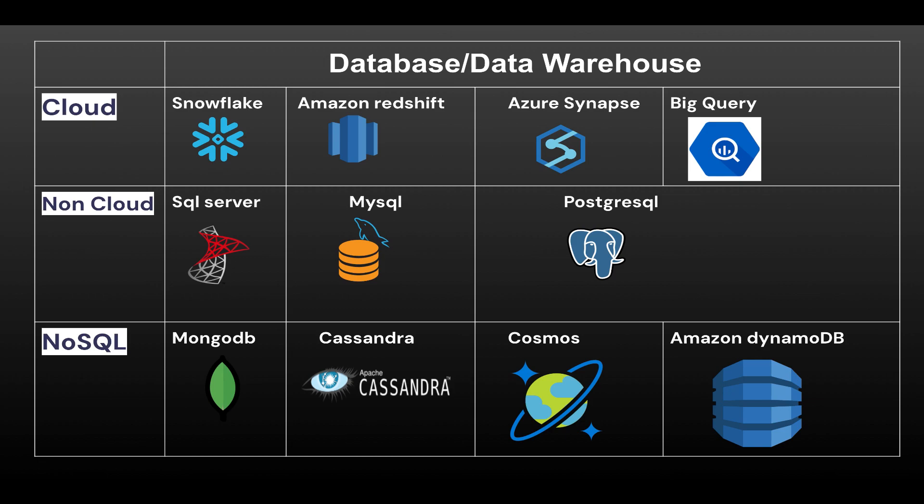For NoSQL databases, MongoDB, Apache Cassandra, Cosmos DB, and DynamoDB are the most commonly used. If you have knowledge of two of these it's very good — for example, MongoDB and Cosmos DB, or Cassandra and Cosmos DB. No need to learn all four at once; extra knowledge is always helpful, but two of them is good enough to get a good job and a good understanding of data engineering.